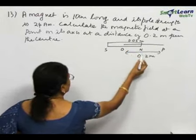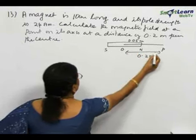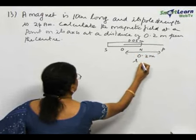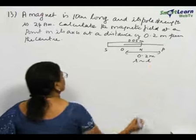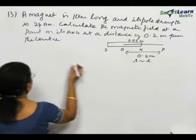So, semi-length. Now, you compare these two. This distance is R. This distance is L. R is comparable with L. Then, you have to use the unapproximated formula.